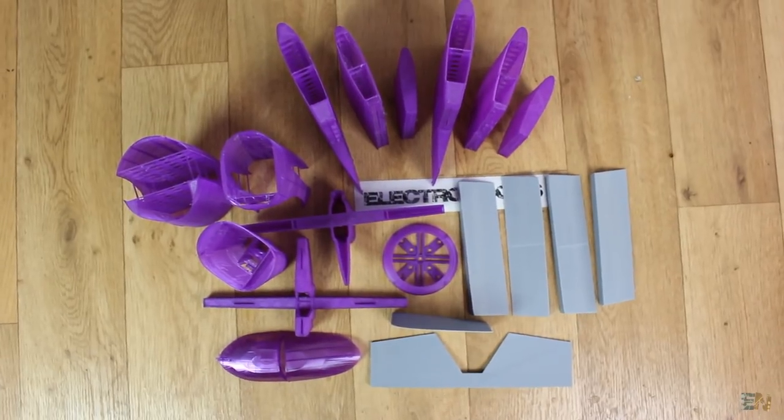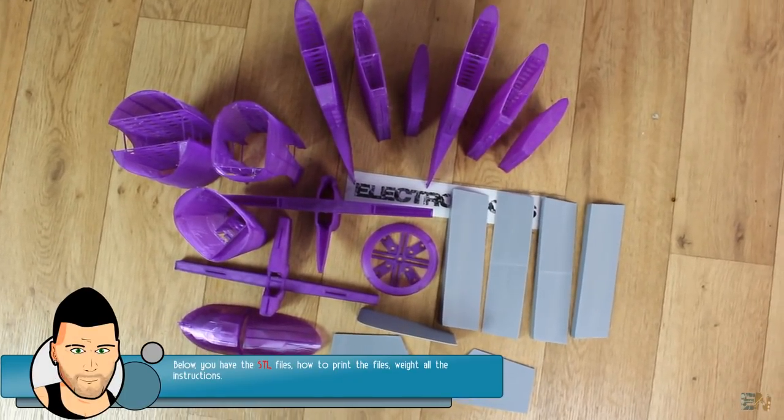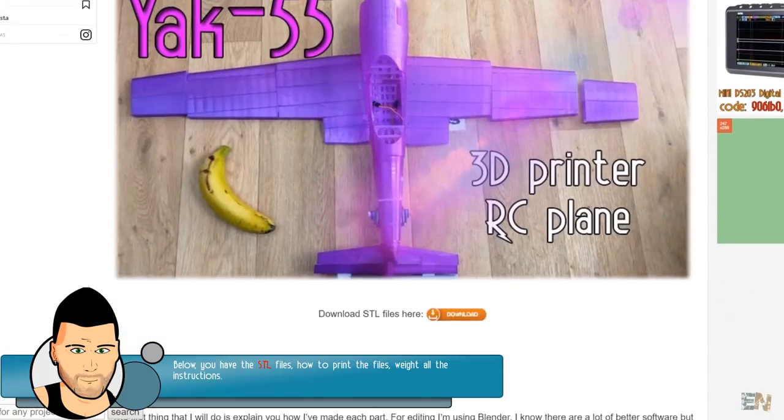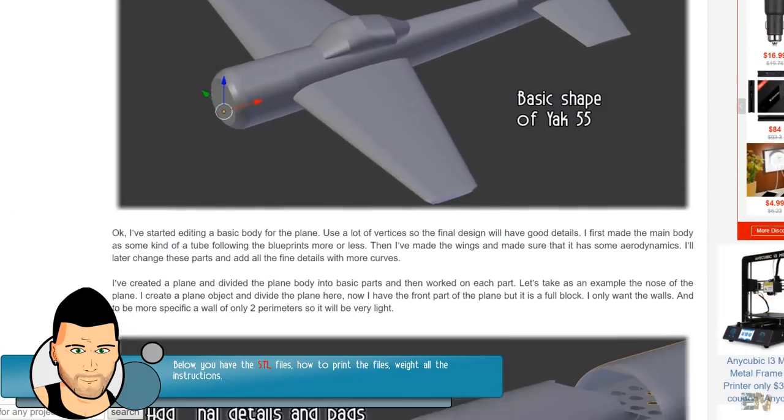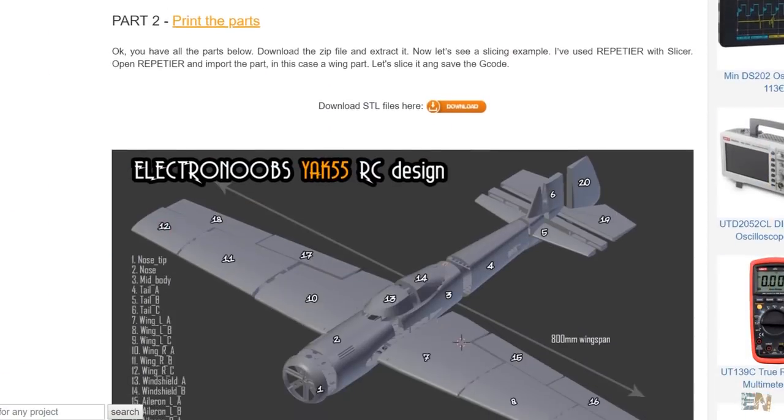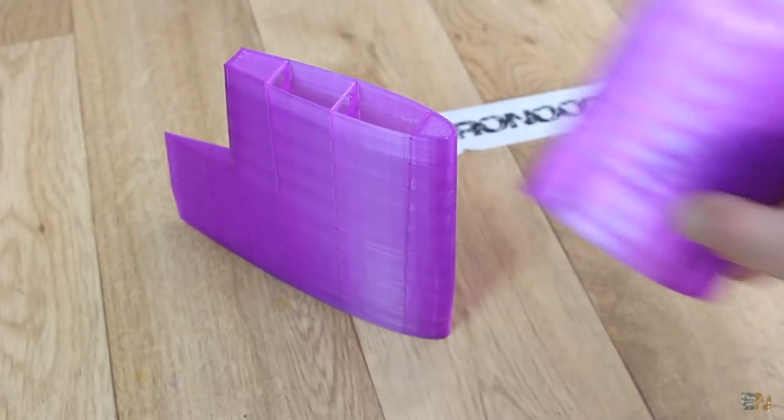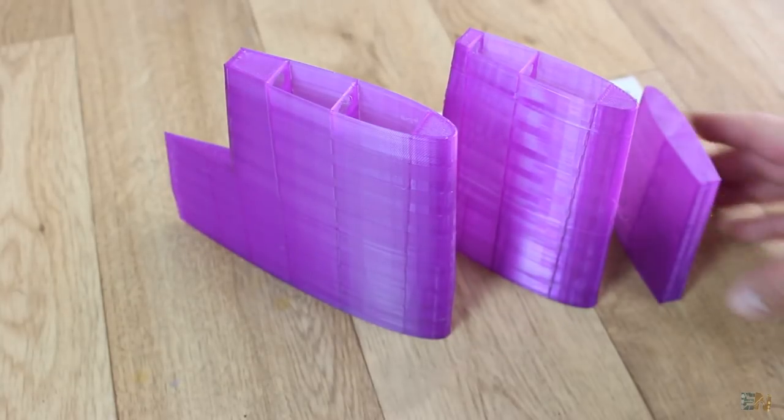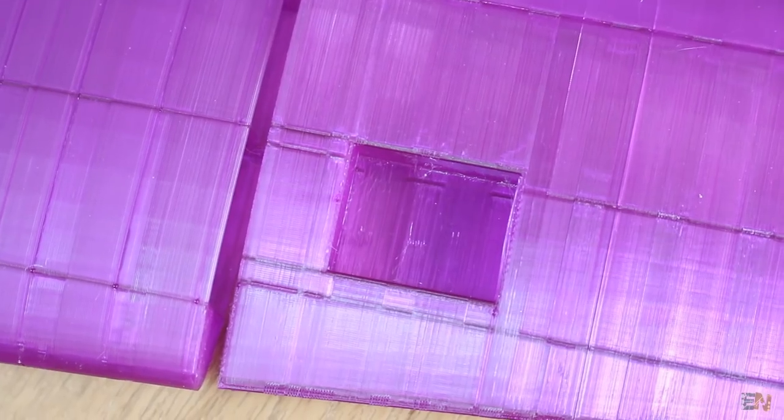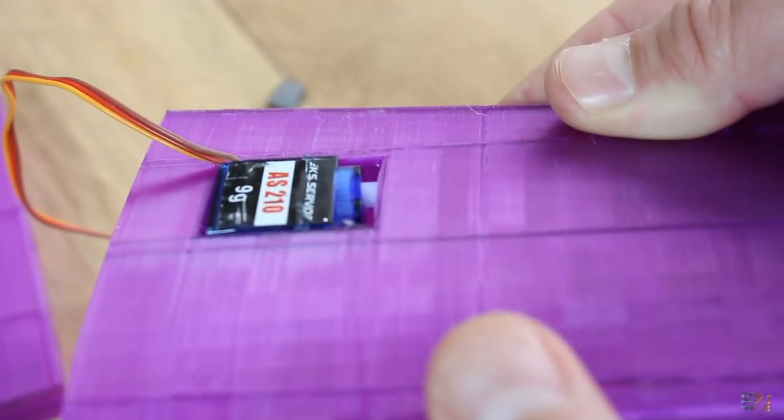These are all the parts for the plane. You have a full description with all the parts below, and also the weight of each part, slice settings and so on. So let's see what we have. We have 3 parts for each wing, wing A, B and C, and they all have pads to be glued on, and the middle part has a space for a 9g servo motor.